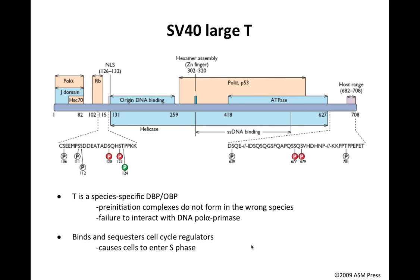SV40 large T has played a large role in our discussion of DNA synthesis and will continue to do so. If you take part two of this course, we talk about how viruses cause disease, and you will see how large T causes cells to be transformed on the way to becoming tumors. This picture is a diagram of SV40 large T — the protein is shown as a blue bar. Here on the left is the first amino acid; it is 708 amino acids long. Shown on it are various functional regions of this multifunctional protein.